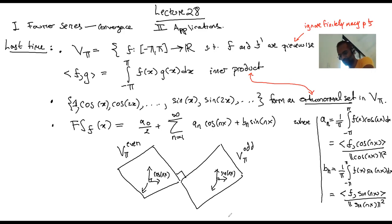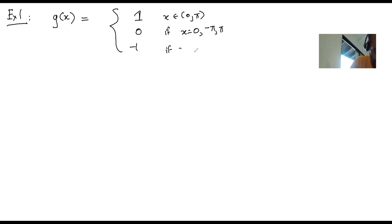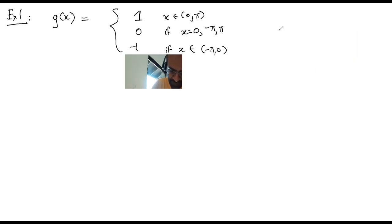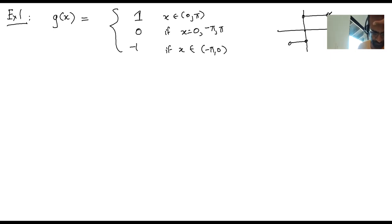Let me have some running examples. Example one is the function g(x), defined to be a step function: it's 1 if x is in the open interval (0, π), 0 if x is 0, −π, or π, and −1 if x is in (−π, 0). This is very similar to the function s(x) from the last lecture, except I've defined it slightly differently at the endpoints — I've set it to be zero there. This will be slightly more convenient for today's lecture.